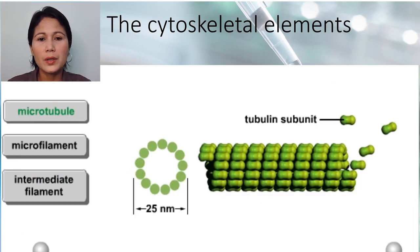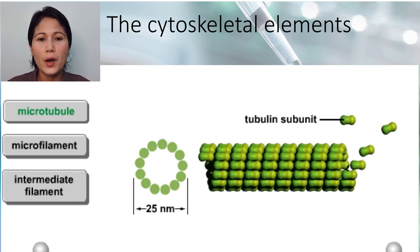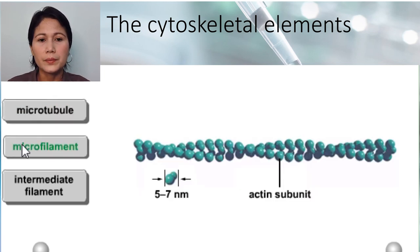A microtubule is a straight, hollow cylinder built from tubulin monomers. When a microtubule is assembled, all of its monomers are oriented in the same direction. This assembly pattern puts slightly different chemical properties at opposite ends of the cylinder.